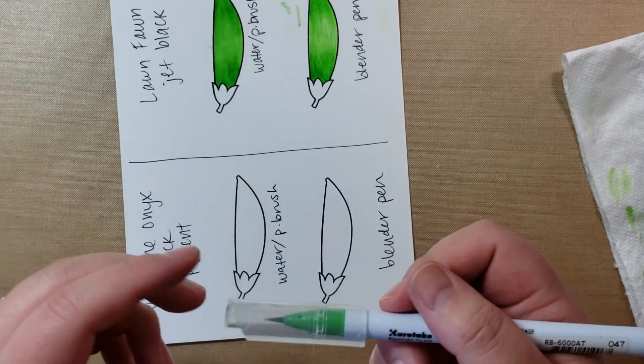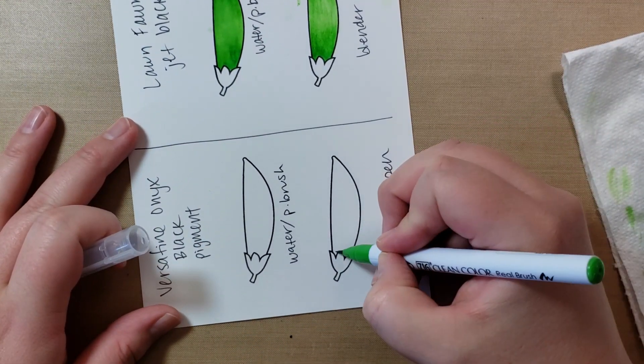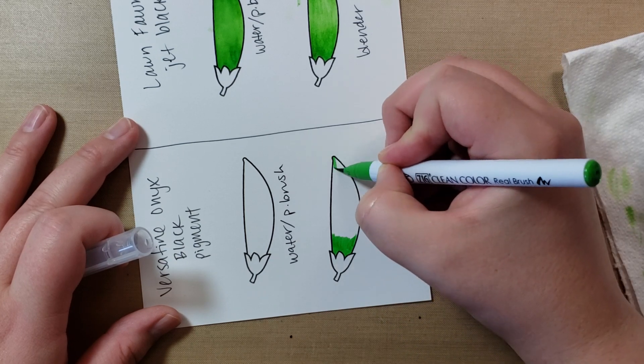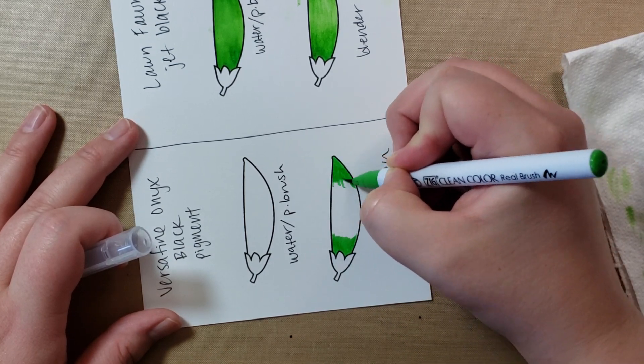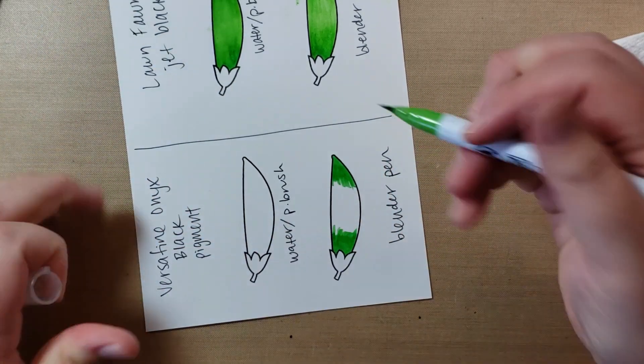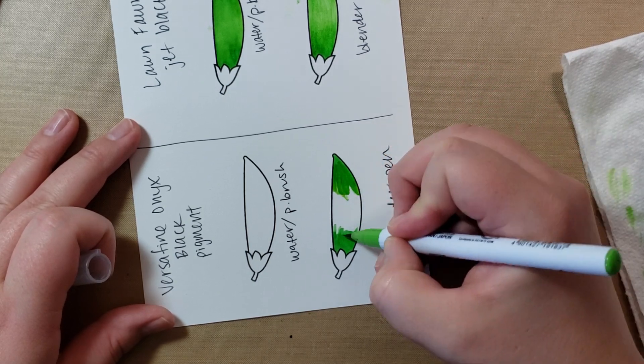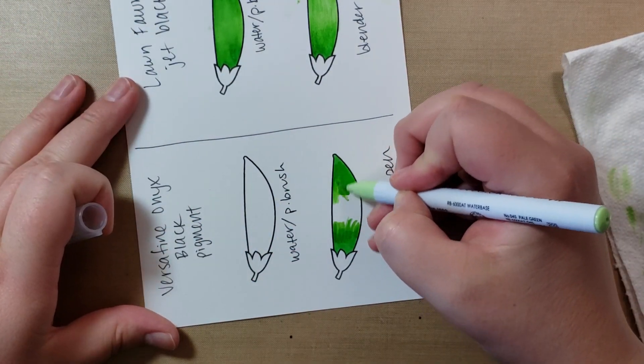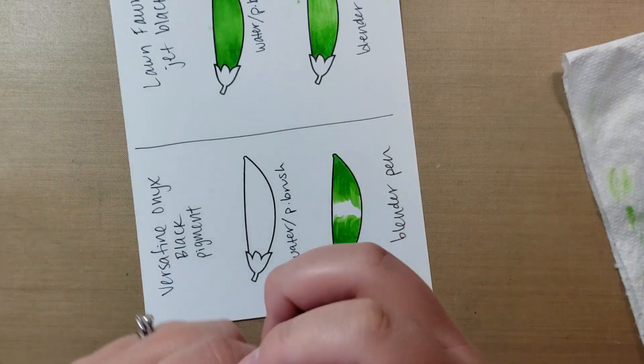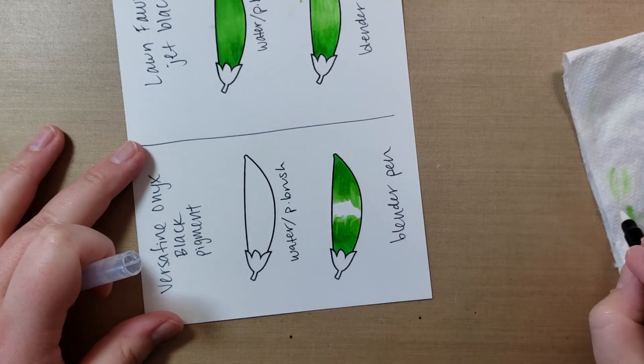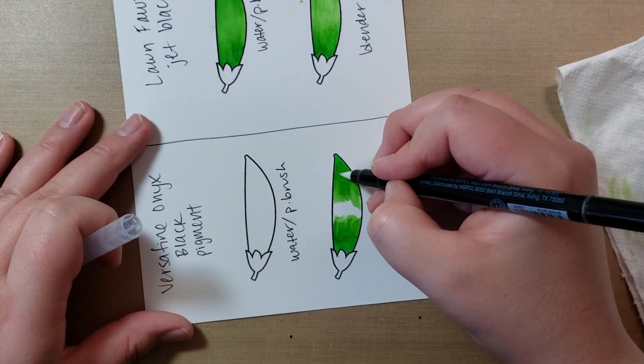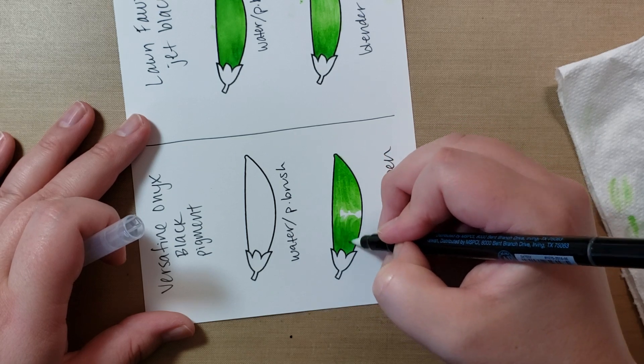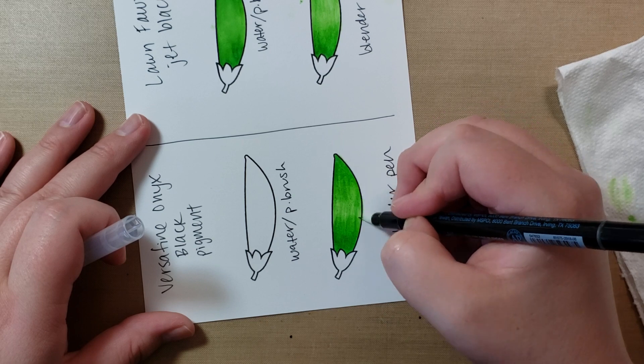And then this is the Versafine onyx black. I'm just going to use the same greens. Now I honestly don't think this ink situation is going to show much difference from what I just showed you. I'm trying to give this some flicking motion. I think it's paper and watercolor ink. And whether you're using, you know, a blender pen or water. So again, same blender pen. I've gotten the green off of it. I realize we're using the same exact colors, but I want to start with a clean brush just to make sure we get the correct results.